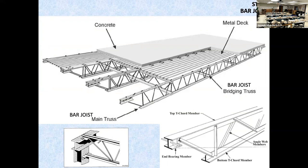A bar joist is brought to the site already prefabricated and put in place. You can see how it goes together with a corrugated metal deck and some lightweight concrete. In the bottom left corner you can see how it bears. It's best to put it on structural steel — if you put it on concrete or wood, you'll need a bearing plate to distribute the load. You generally want to put steel onto steel.